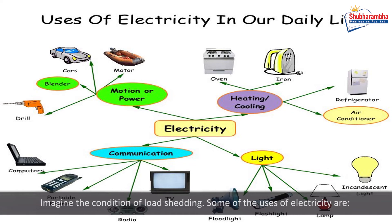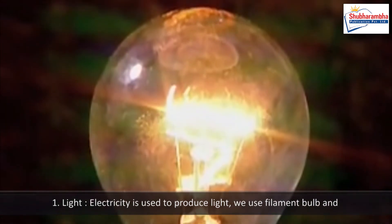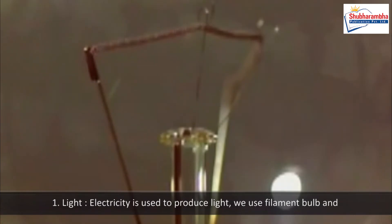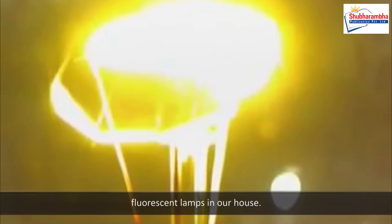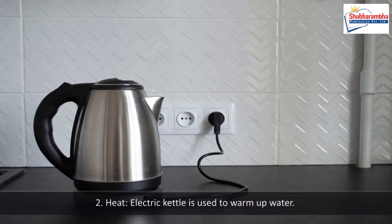Some of the uses of electricity are: One, light - electricity is used to produce light. We use filament bulbs and fluorescent lamps in our house. Two, heat - electric kettle is used to warm up water.